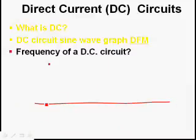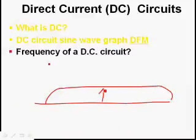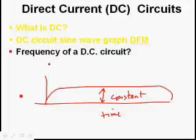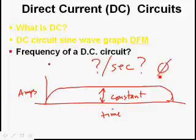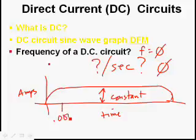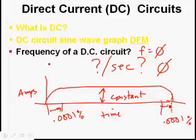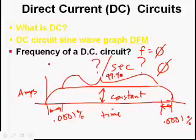The frequency of a DC circuit: the height of our amps is constant — it's not changing. How many times per second is it changing? That would be zero. The frequency of a DC circuit is zero, because we're only worrying about the 99.9% of the time it's steady-state. The vast majority of the time it's not changing, so the frequency of a DC circuit is zero.